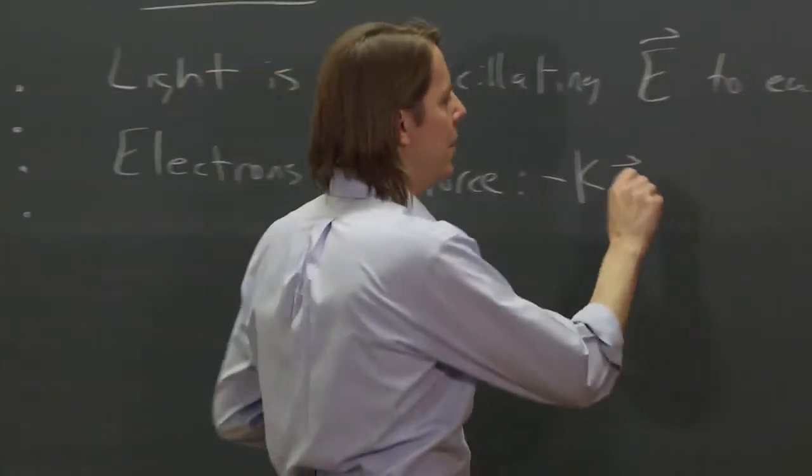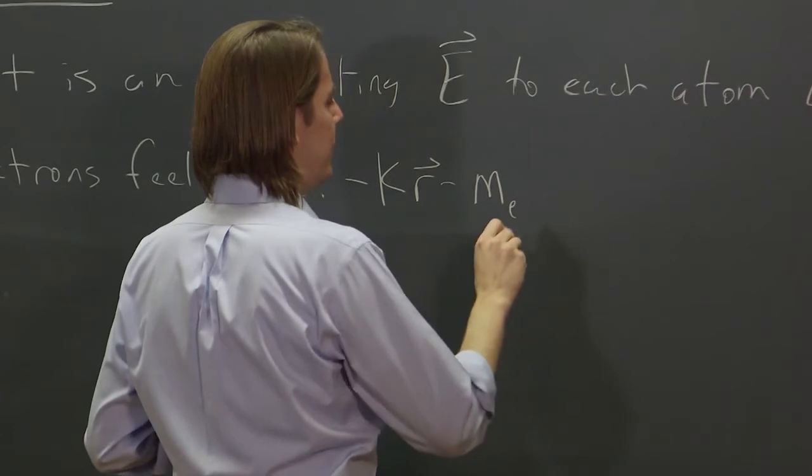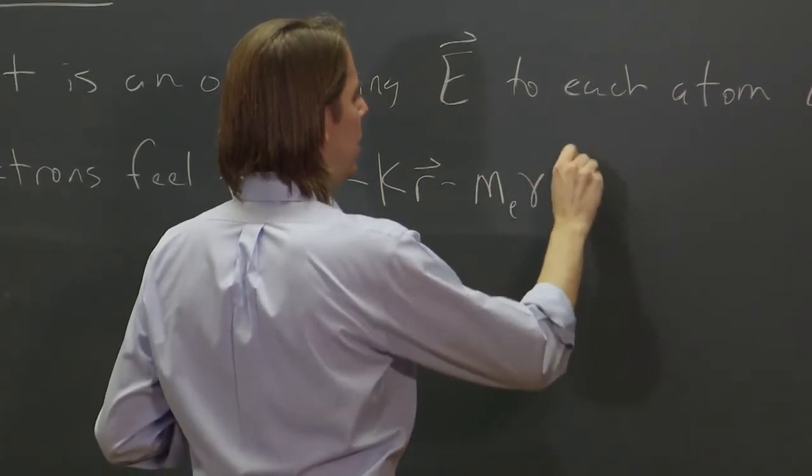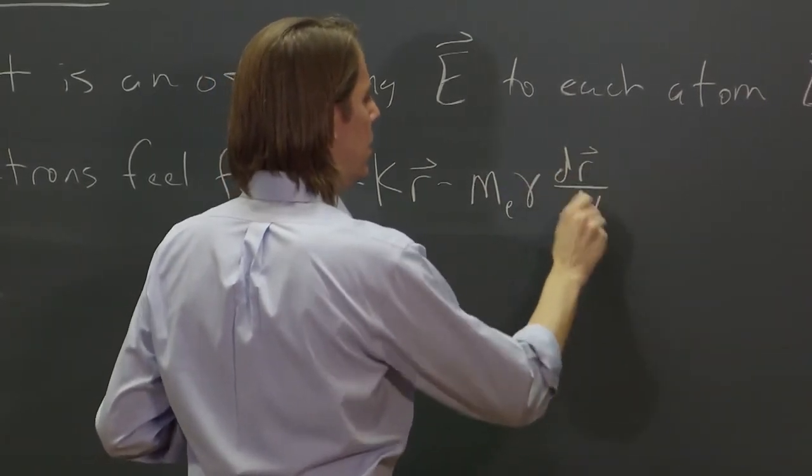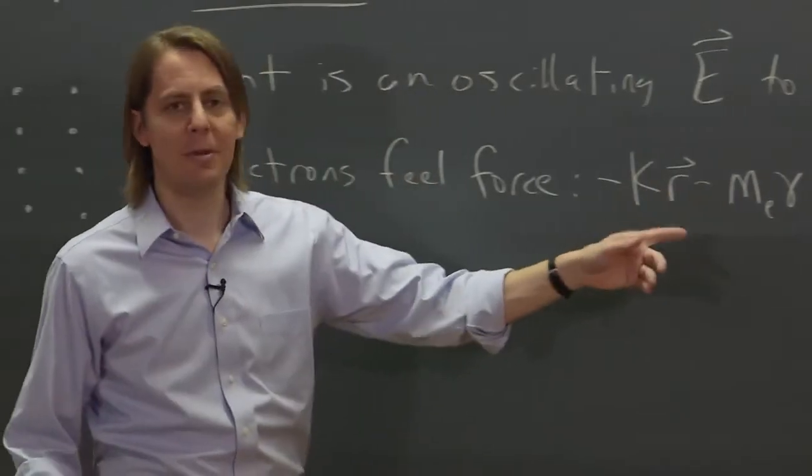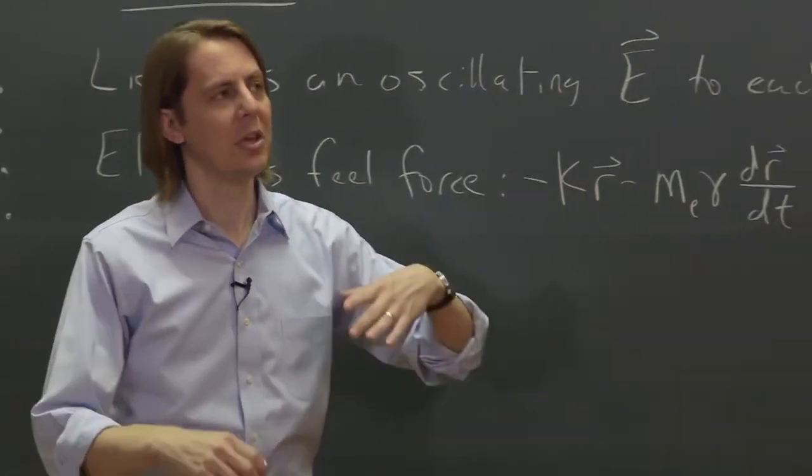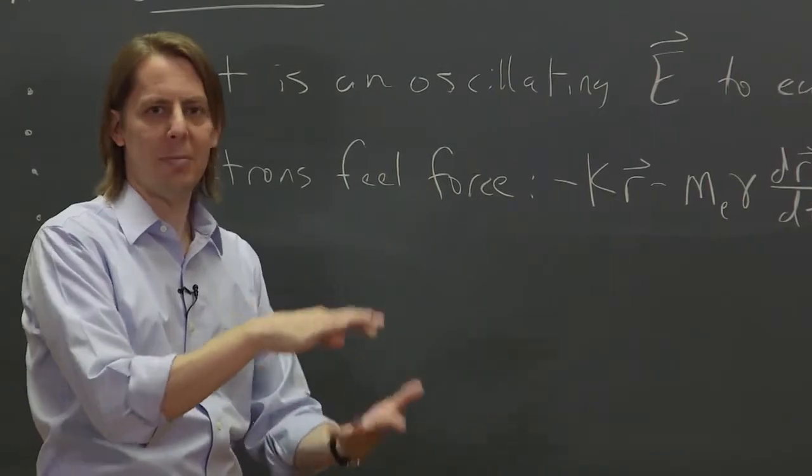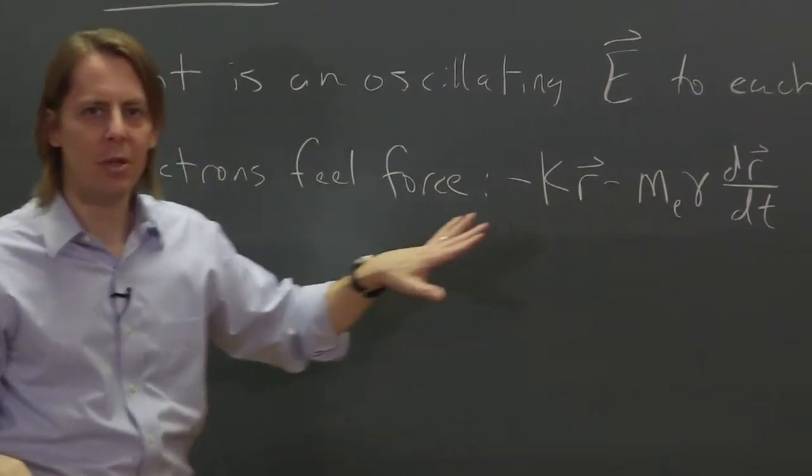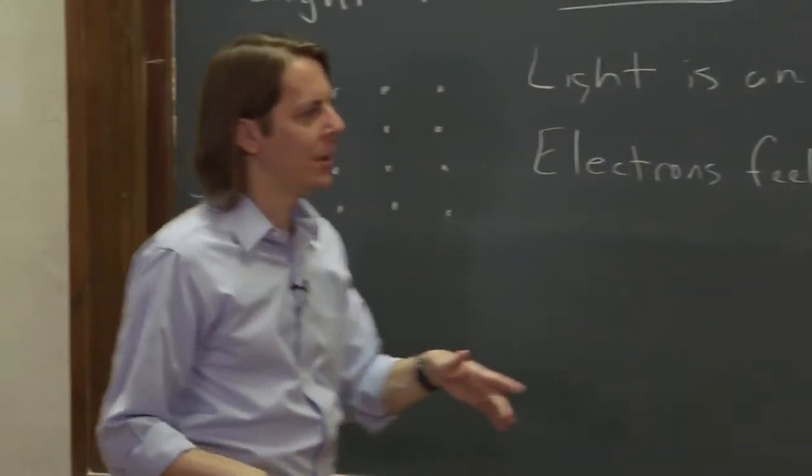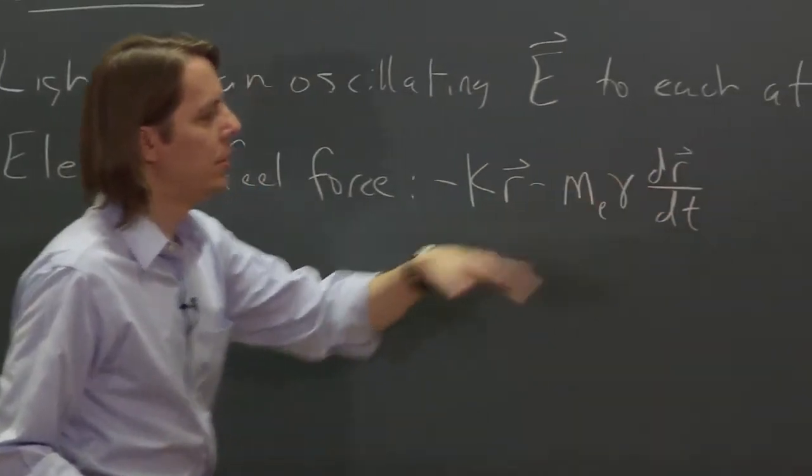And then minus Me, the mass of the electron, times gamma times dr dt. That's the damping force. So we think of a macroscopic oscillator with a dashpot and oil that has damping. But even at the microscopic scale, there are mechanisms that give you damping that are also proportional to the velocity.